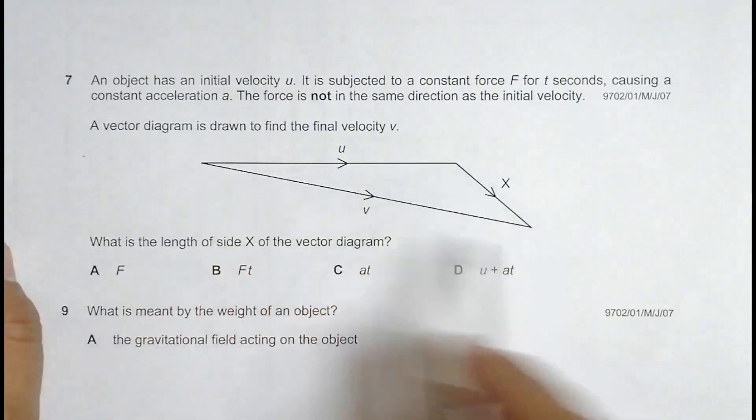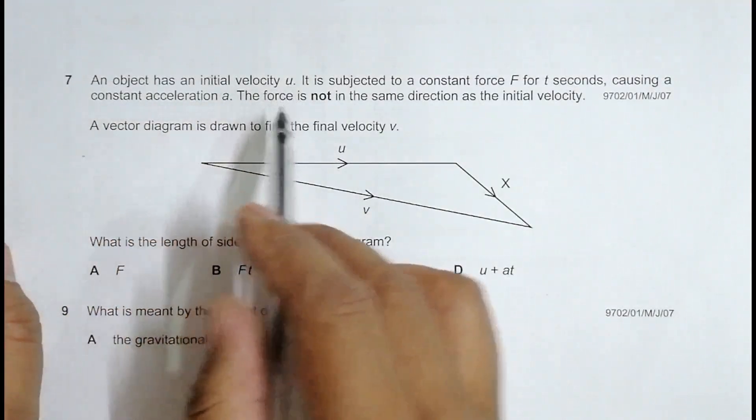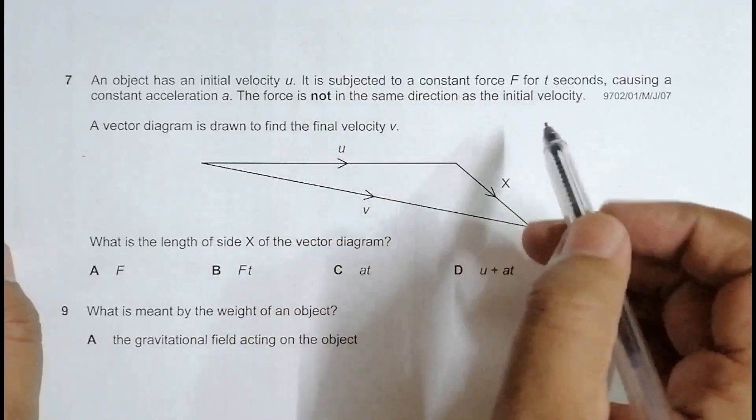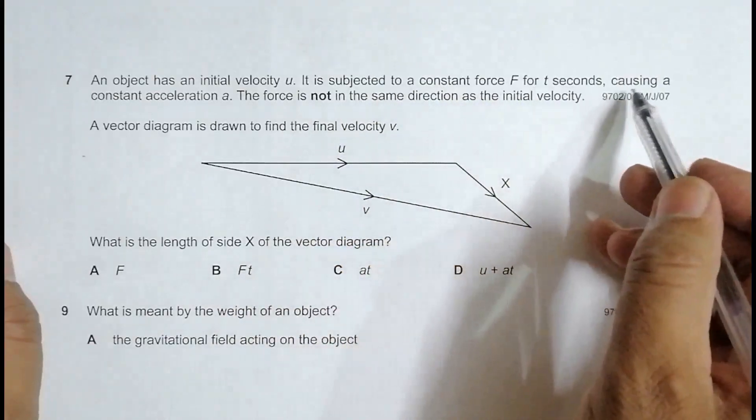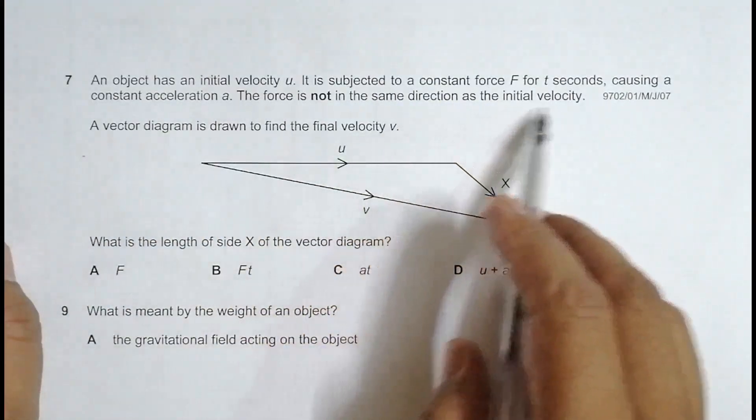So you can see a vector diagram here, so it's question number 7 here. An object has initial velocity U, it is subjected to a constant force F for T seconds, so that means there is a constant acceleration A, and the force is not in the same direction as the initial velocity.